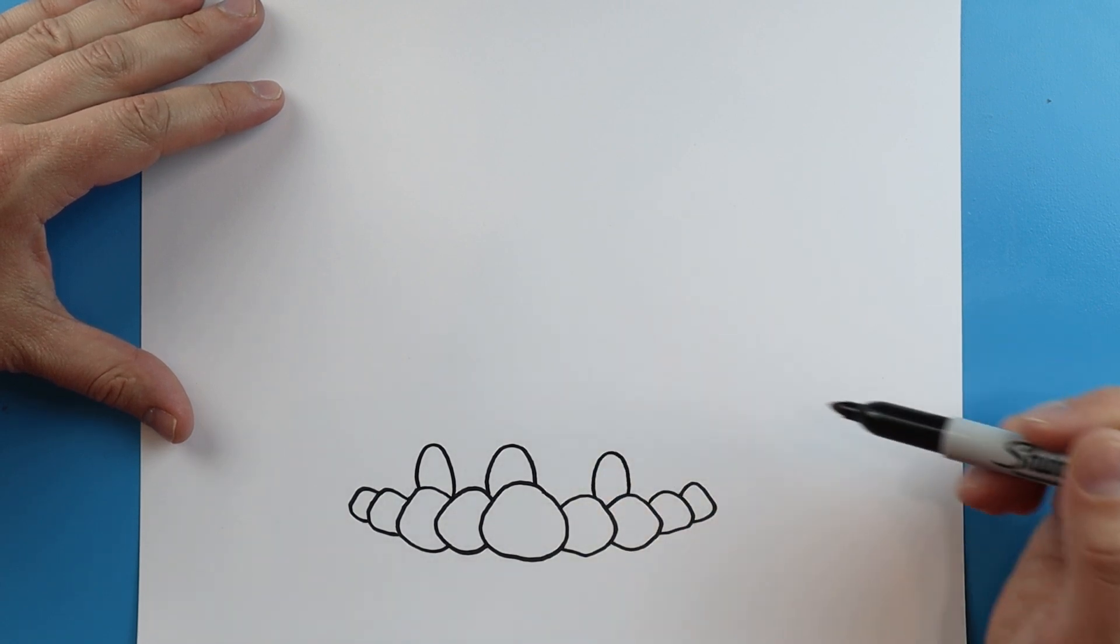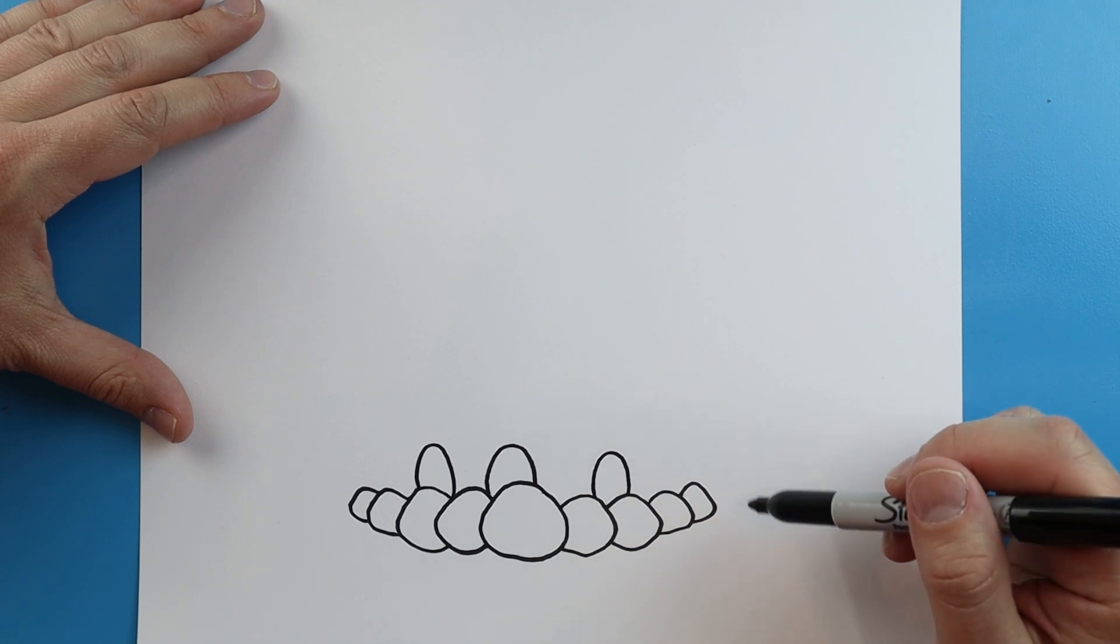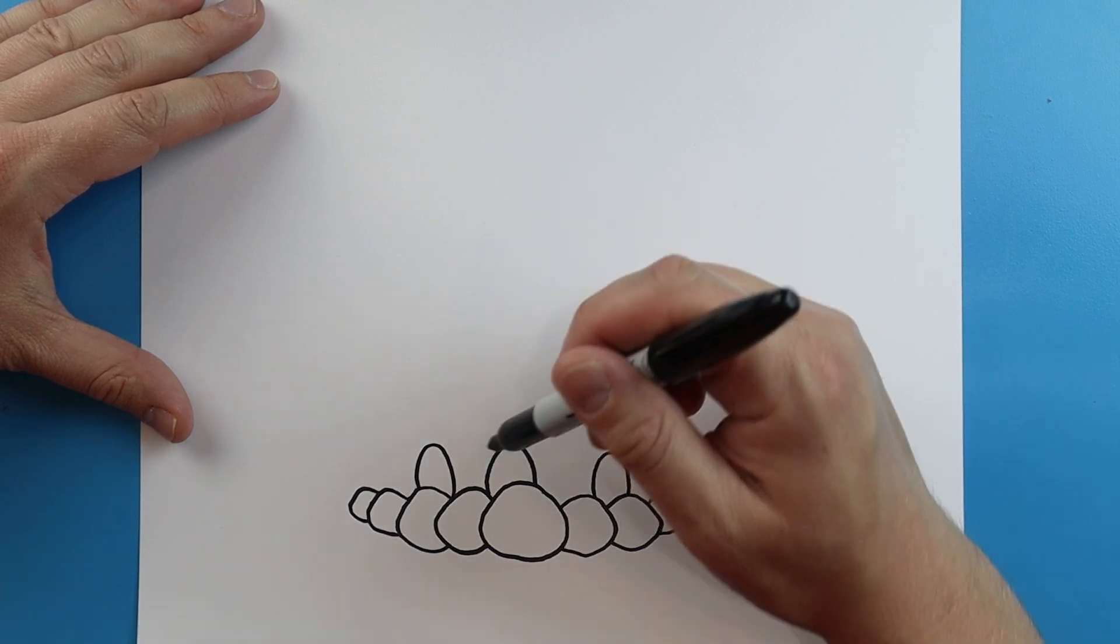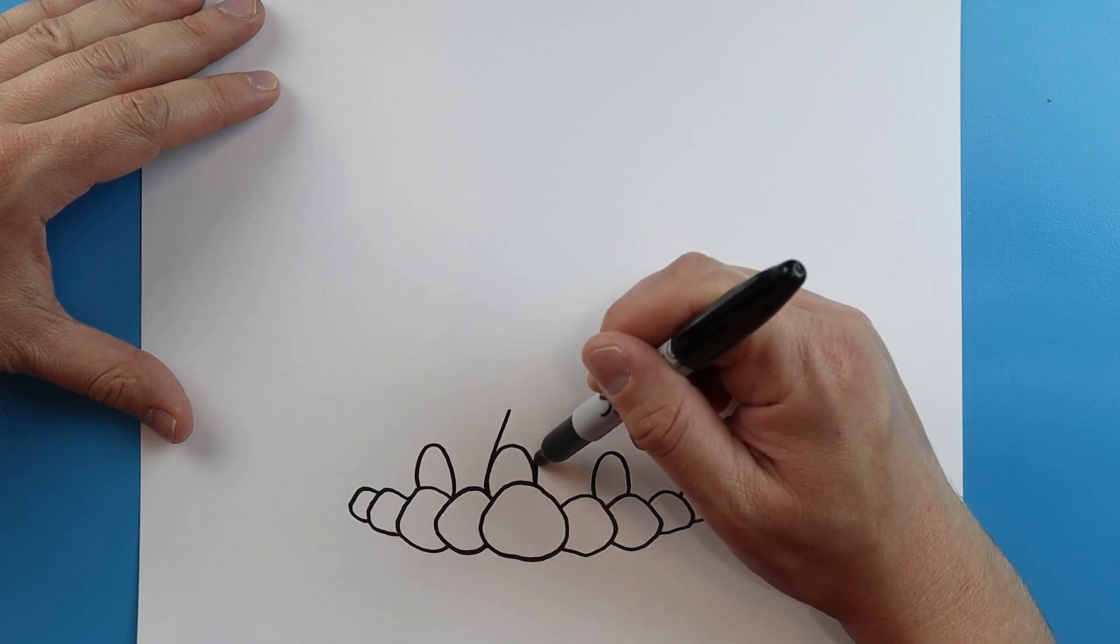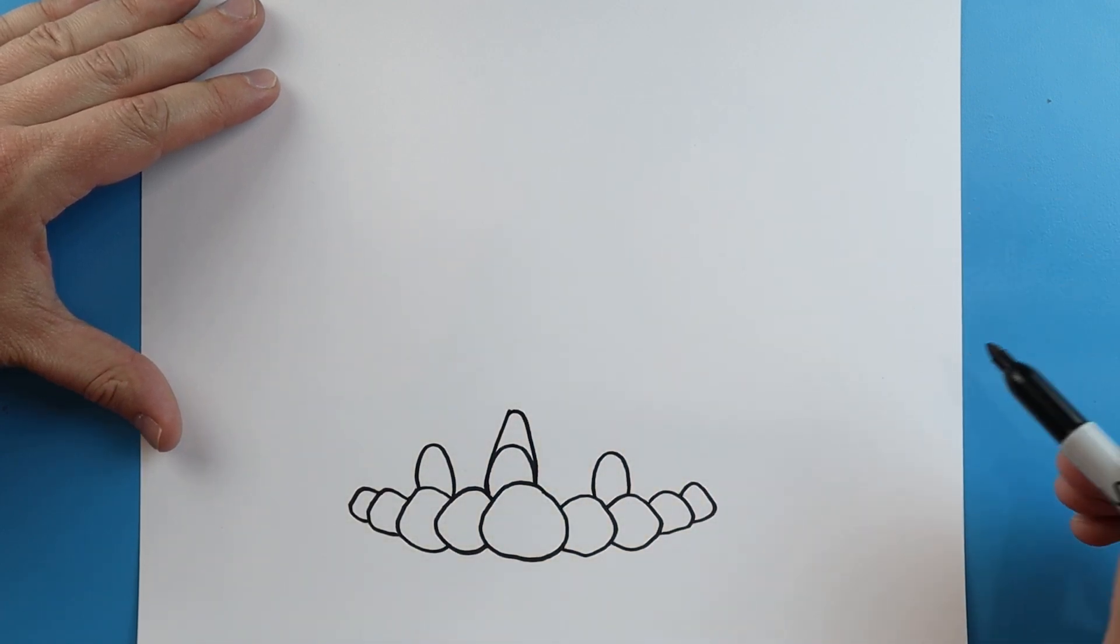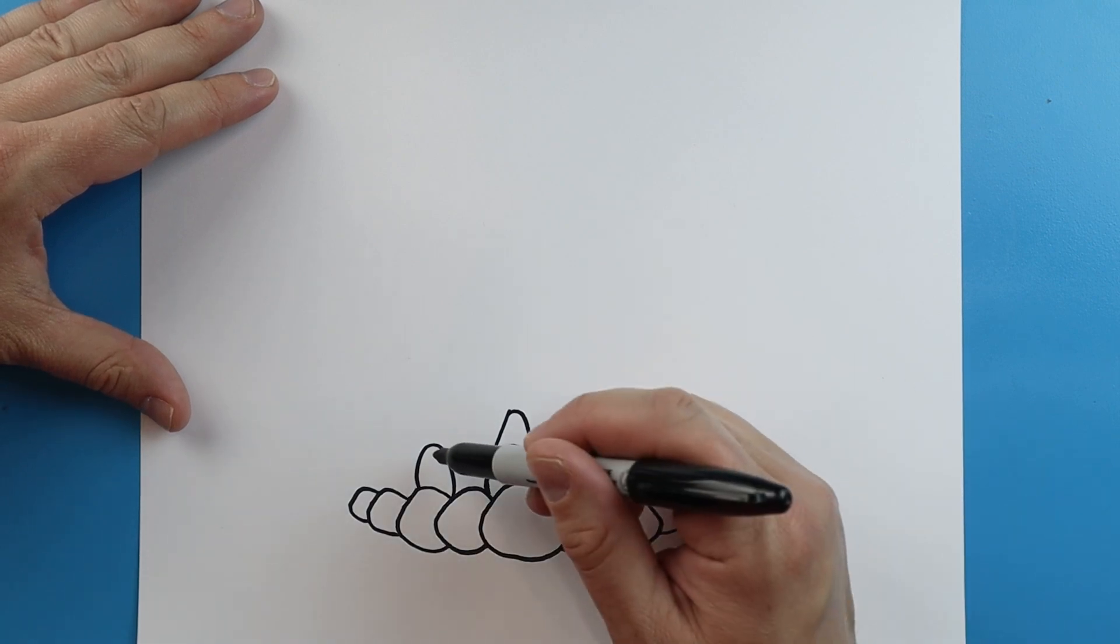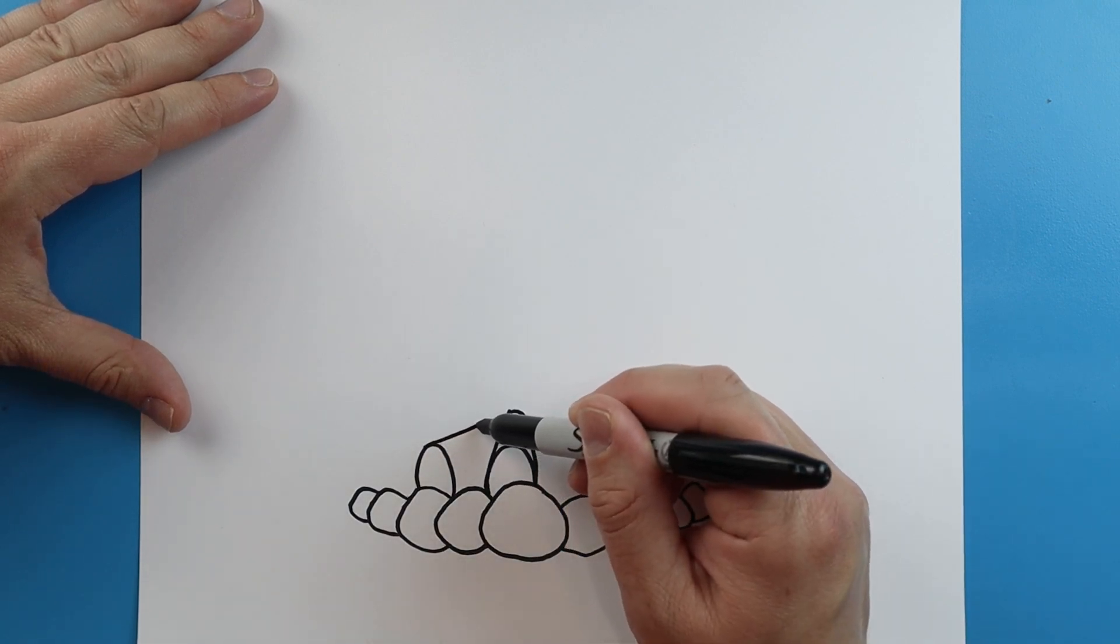And then I'll put another one right over here. Now this first one, I'm going to make this line go up, and then this one go up, and then I'm just going to curve it over. Then I'll make this one come up and down.